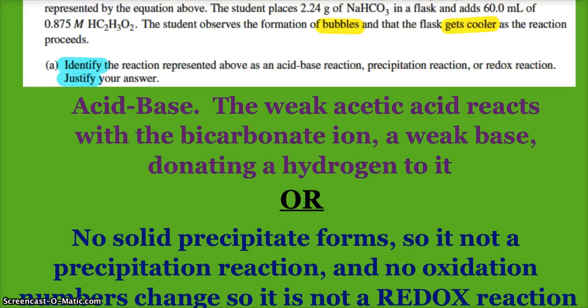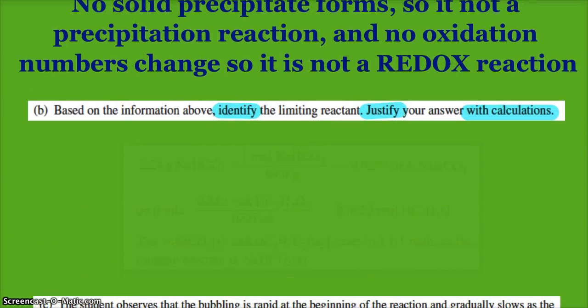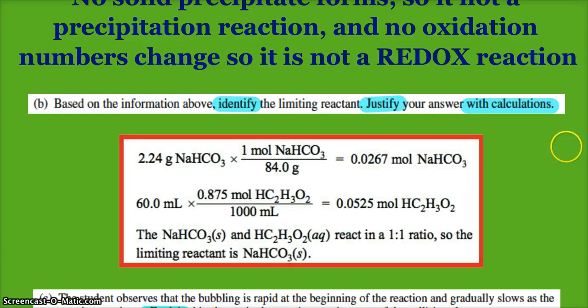Based on the information, identify the limiting reactant—justify with calculations. Well, I've got grams of the bicarb, milliliters of my 0.875 molar acetic acid. It's a one-to-one ratio, so I just need to figure out moles of each, and whichever there's less moles of, that's my limiting reactant. So 2.24 grams of the sodium bicarb divided by 84, and figuring out my moles from the molarity of the acid, you can see that there's less sodium bicarb moles—that's the limiting reactant.